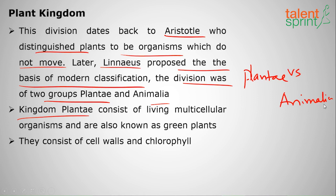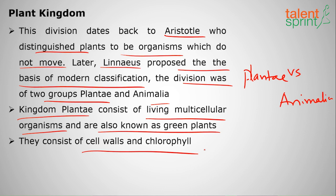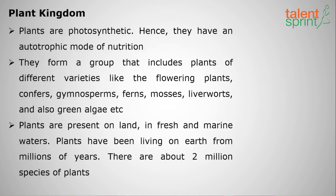Kingdom Plantae consists of living multicellular organisms, also known as green plants. They consist of cell walls and mostly chlorophyll. Plants are photosynthetic — meaning they can prepare their own food using sunlight — hence they have an autotrophic mode of nutrition.